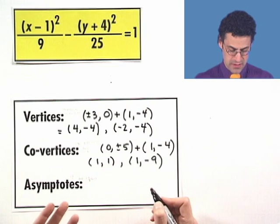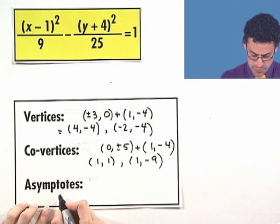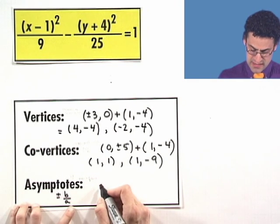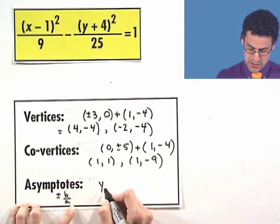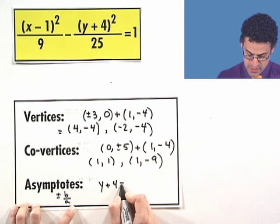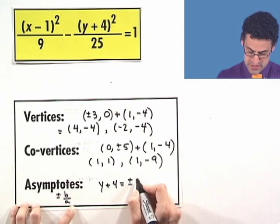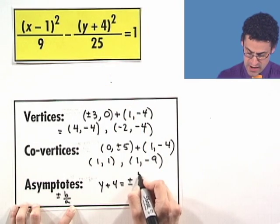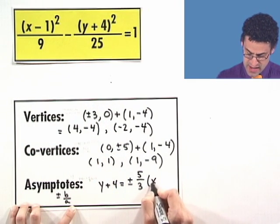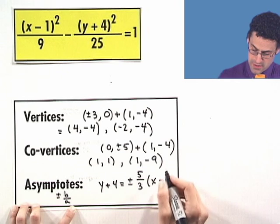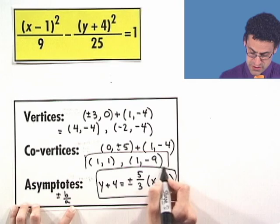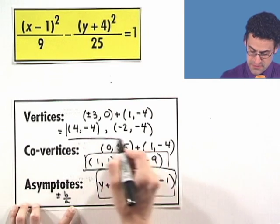And what are the asymptotes? Well, again, since the x comes first, I see the slope of the asymptote is going to be plus or minus b over a. And so I see y minus the y value, which is going to be minus negative 4, which is going to be plus 4, equals the slope plus or minus 5 over 3 times x minus the x value, which is 1. So there are the two asymptotes, these are the two co-vertices, and these are the vertices.